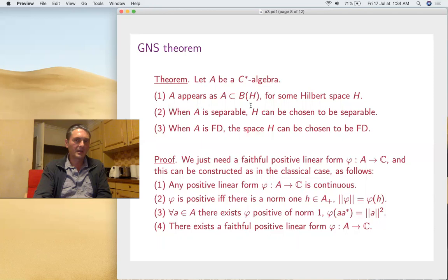With this we can prove the GNS theorem. Any C*-algebra appears as an operator algebra. Everything was in the previous slide. We just need the fact that such a faithful positive form exists. In the classical case, the thing is that any compact space has a probability measure. That's really annoying. You have to find a measure somehow at any point, not make something like Cesaro averaging, a sum to get your measure. This can be done also in the C*-algebra setting.